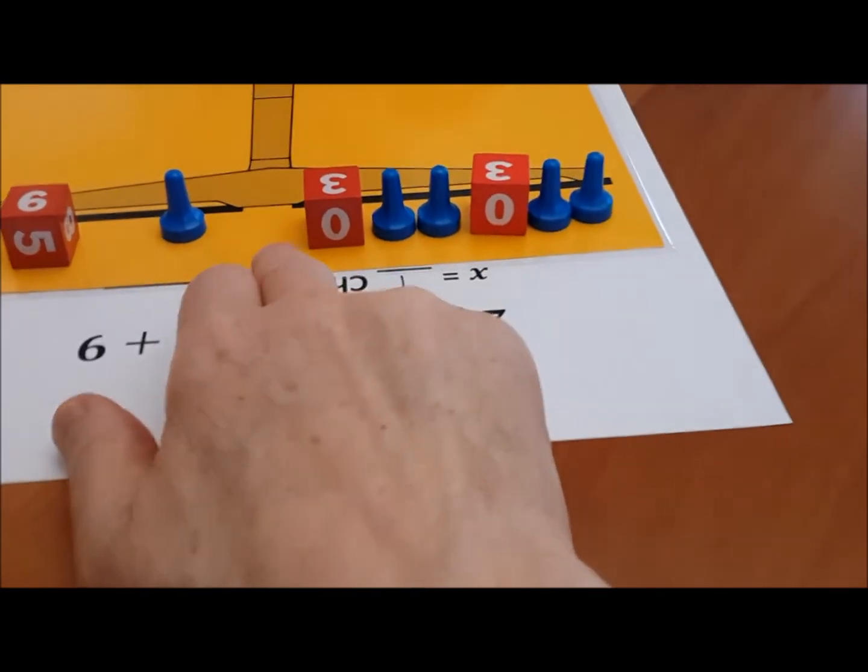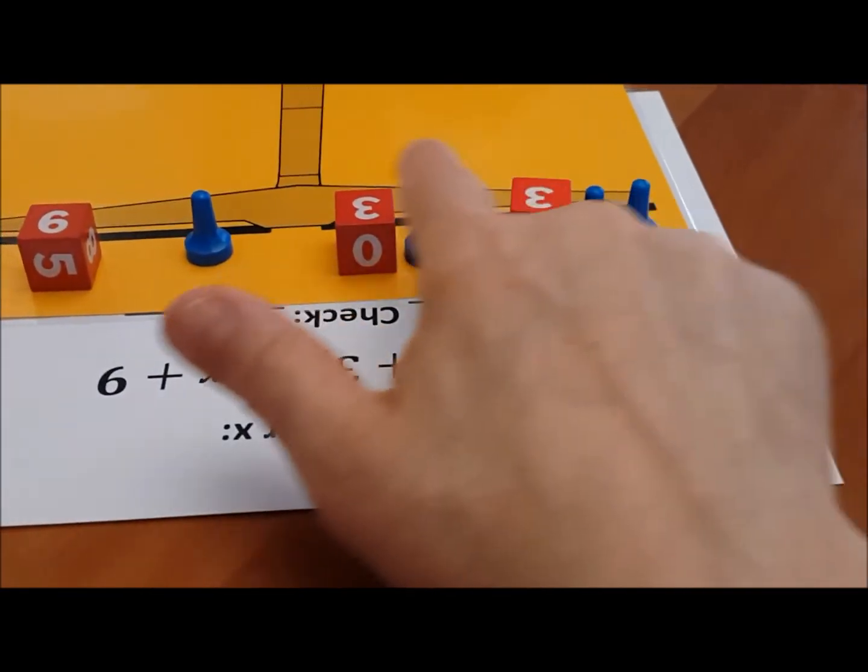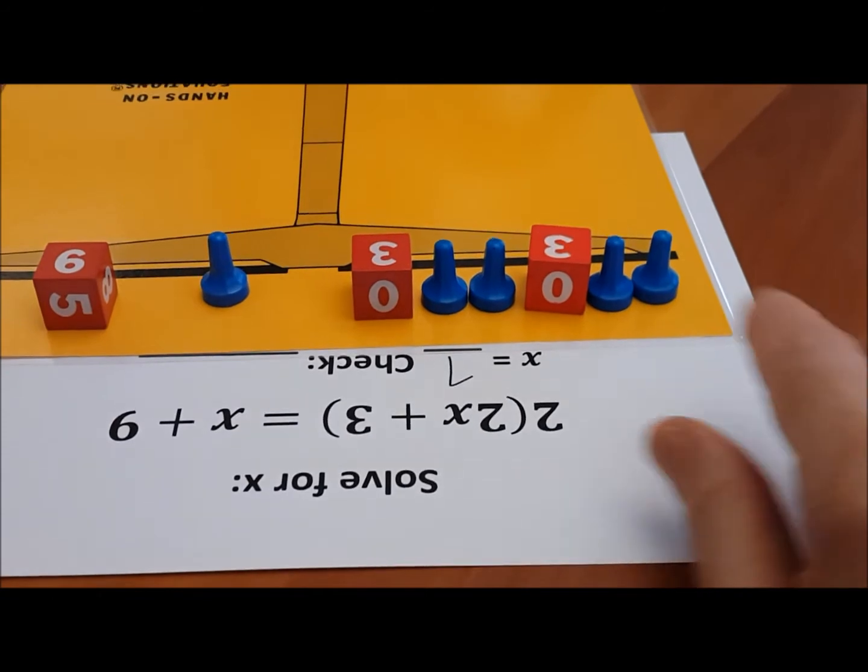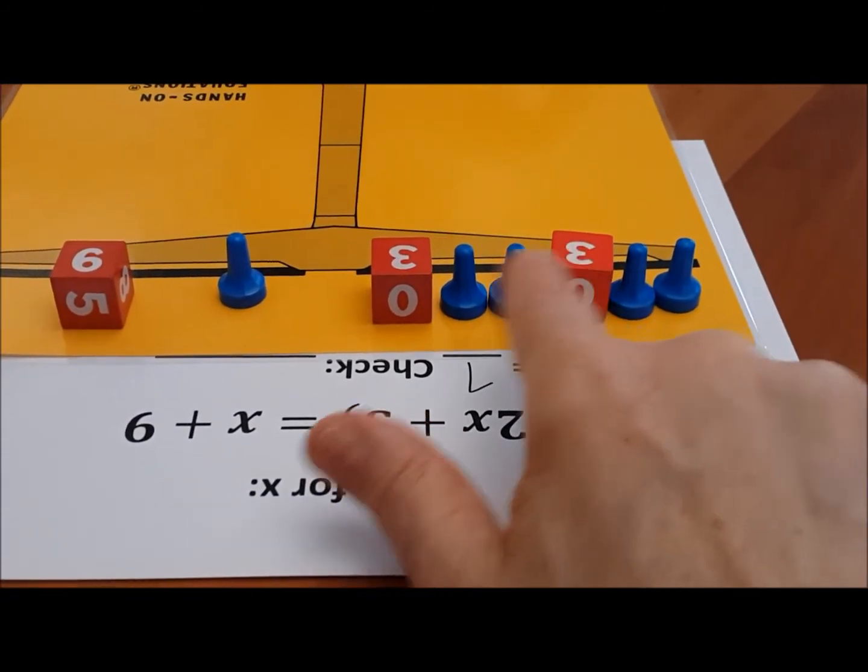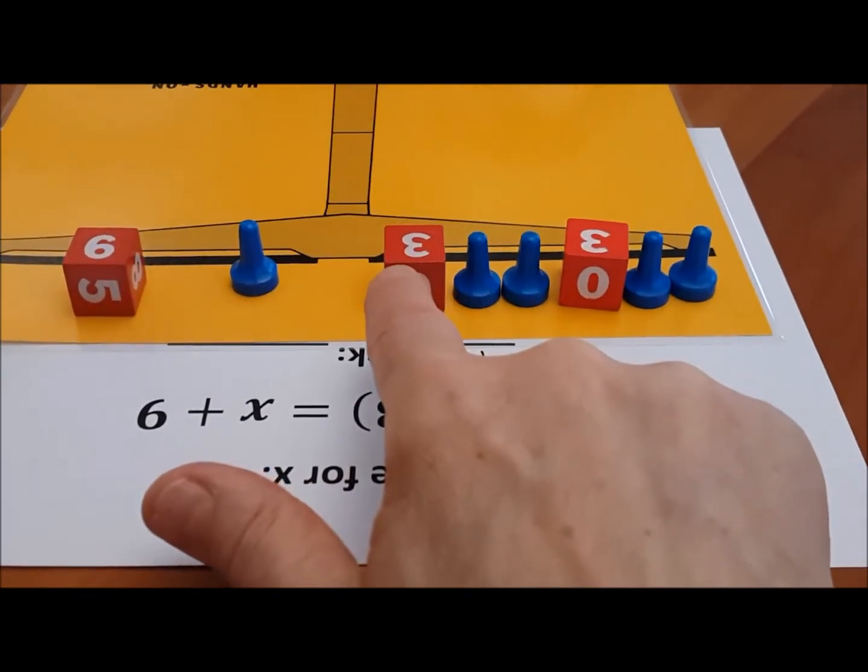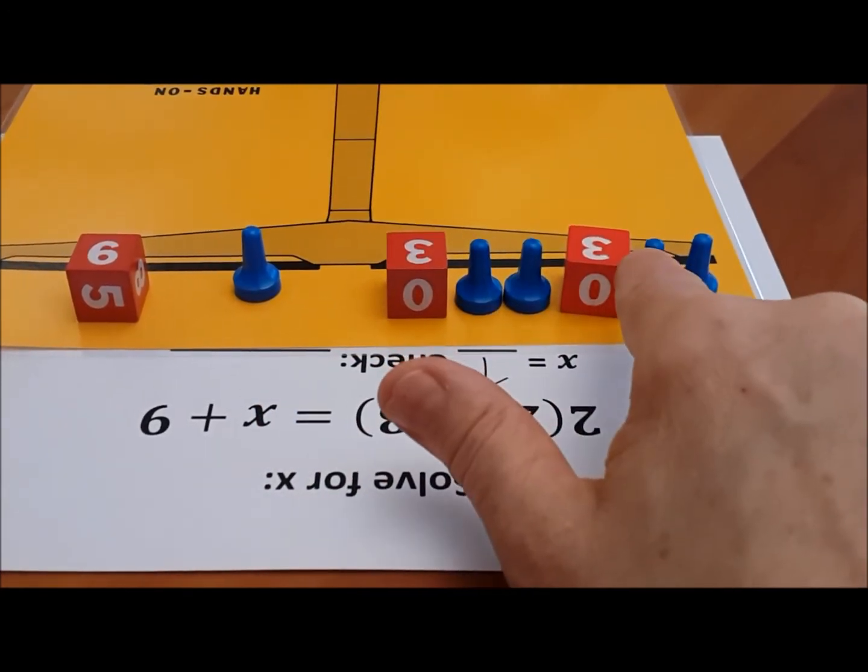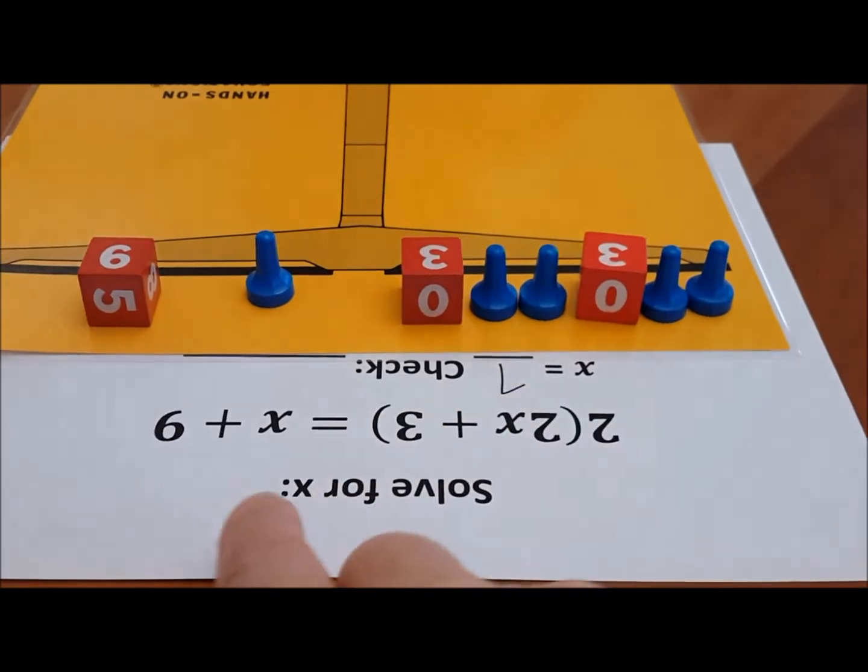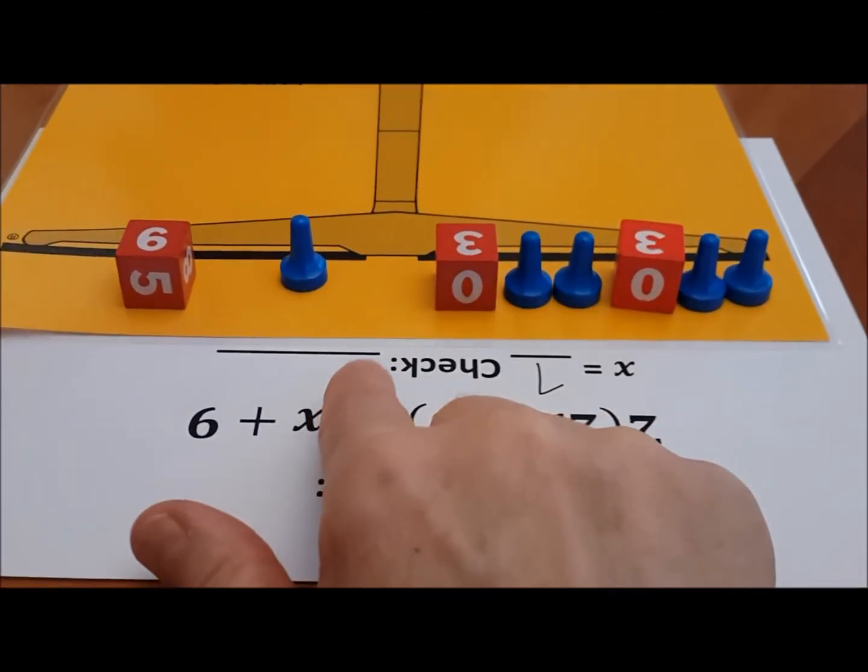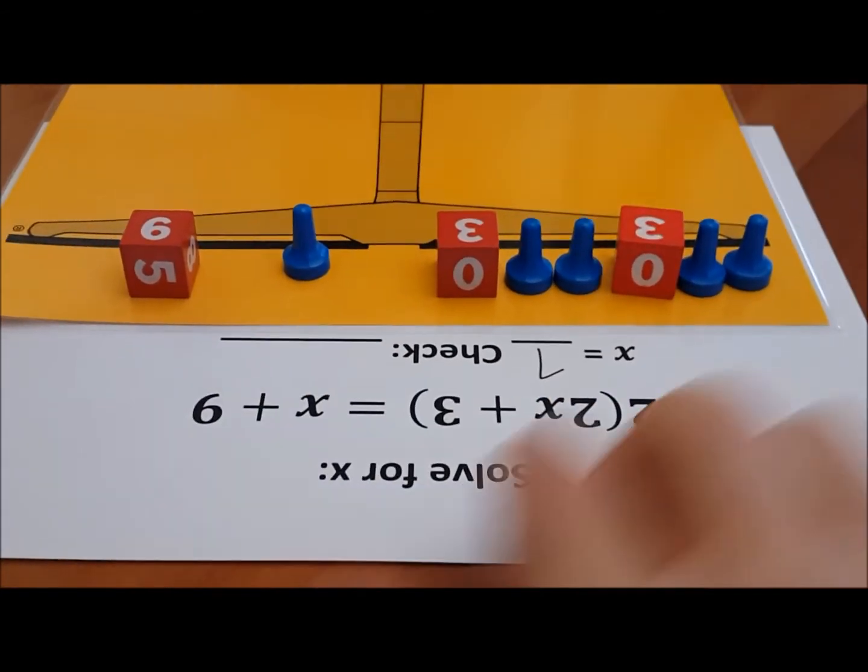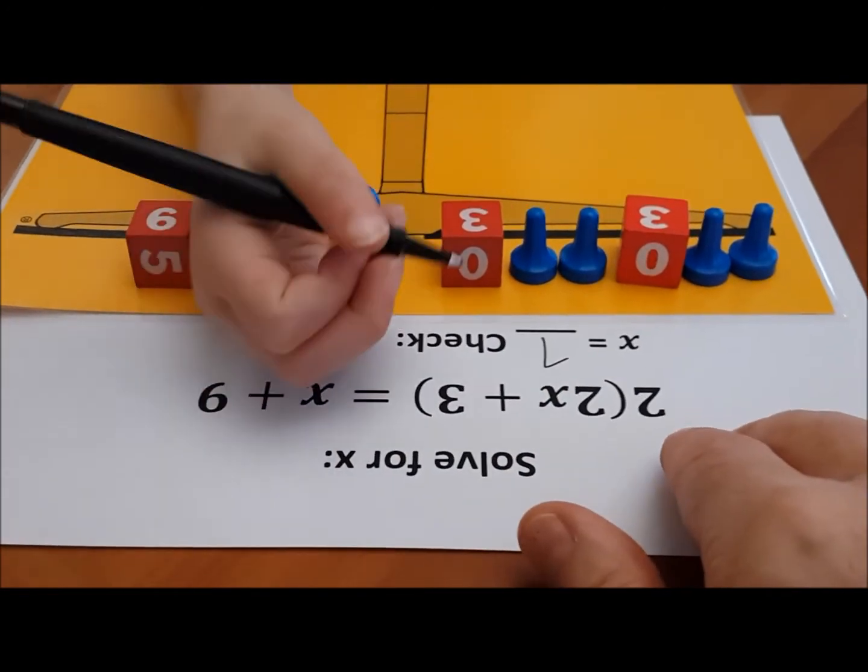And we just said that x is equal to 1. So let's try that. If x is 1, how much do I have on this side? Why don't you begin with the 2 3's? 3 and 3 is 6. And one more? 7, 8, 10, 8. All together is 10. So on this side please write 10 equals. That's the value of this side of the equation.